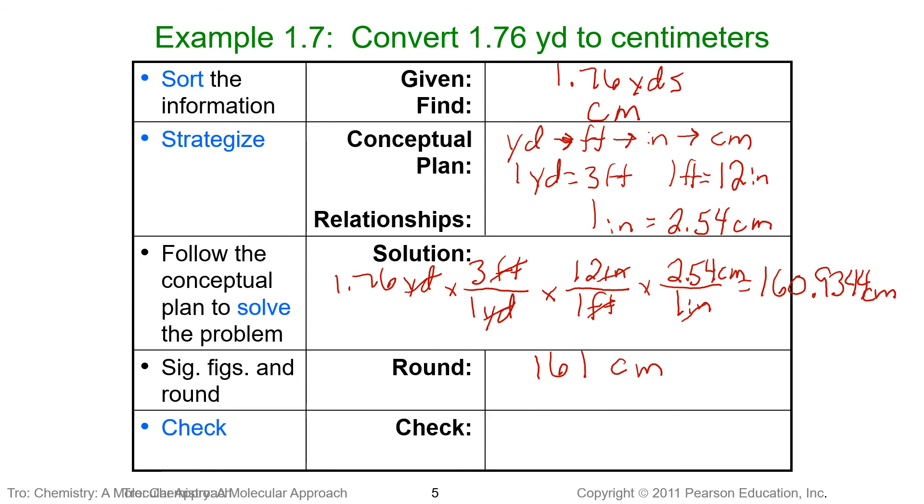Now, does this answer make sense? We want to check to make sure it makes sense. We know our units are correct. And centimeters are much smaller than yards. So we would expect to have a larger number, more of them, than we did with yards. So this does make sense.